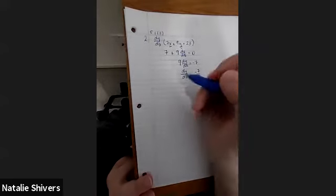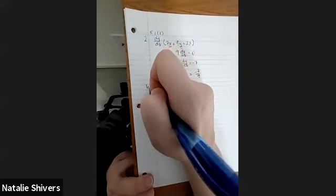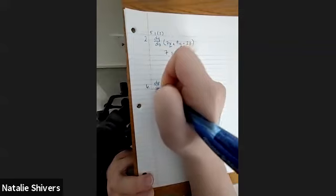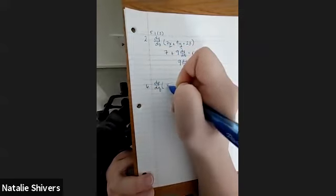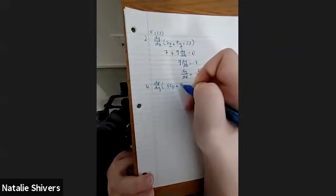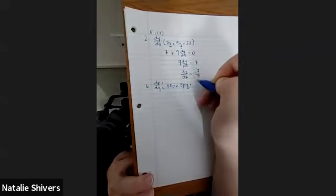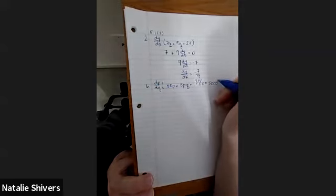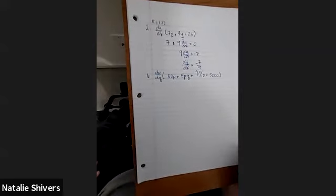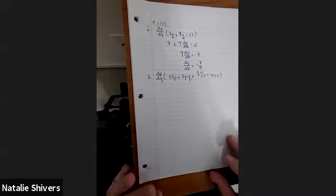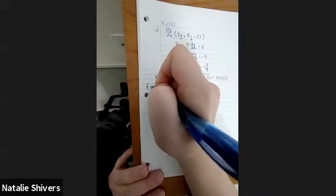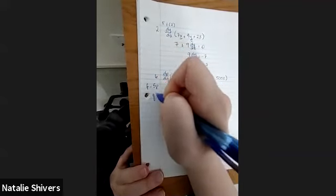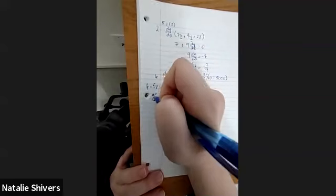Let's do number six. This time we're going to do dp/dq of 50p + 5pq + q²/10 = 5000. This time we have a product rule in the middle that you saw a lot of last lesson. I'm going to put it in the margin: f is 5p and g is just q.